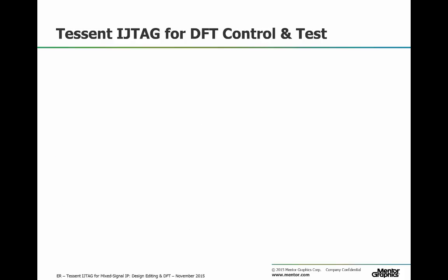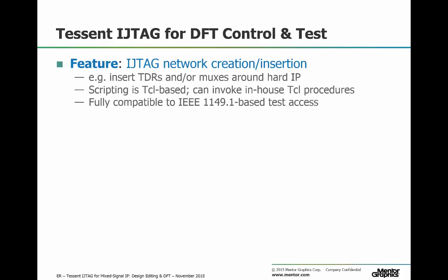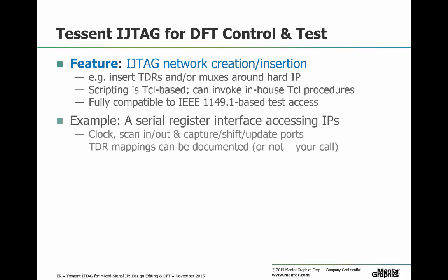One of the main features of Tessent iJTAG is that you can use it to insert an iJTAG network around your IP blocks. For instance, you can add scan MUXs, test data registers, and so on. All scripting is TCL based and you can typically invoke in-house TCL procedures straight from the tool.